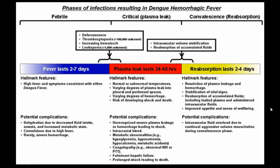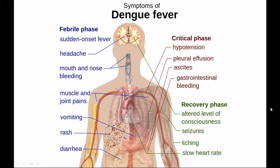In the febrile phase, the person has high-grade fever and symptoms consistent with Dengue fever — sudden onset of fever with headache, mouth and nose bleeding, muscle and joint pains, vomiting, rash, and diarrhea. In the critical plasma leak phase, due to plasma leakage, the person experiences hypotension, pleural effusion, ascites, and gastrointestinal bleeding. In the recovery phase, altered level of consciousness, seizures, itching, and bradycardia can be seen.